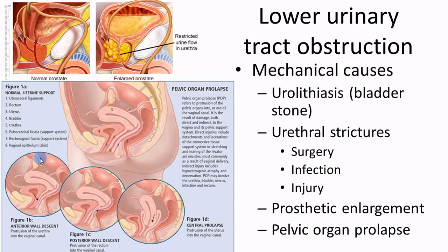Lower tract obstructions involve the bladder and below. Bladder stones are called urolithiasis, distinct from nephrolithiasis (kidney stones) and uretero-lithiasis (ureter stones). Urethral strictures — narrowing from surgery, infections, or injury — can also cause obstruction. In women, pelvic organ prolapse can occur — the uterus, cervix, or rectum folding over — more commonly after childbirth.